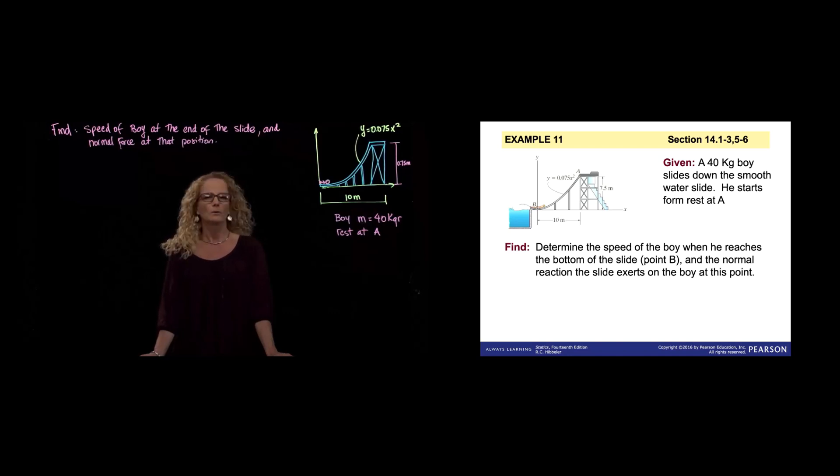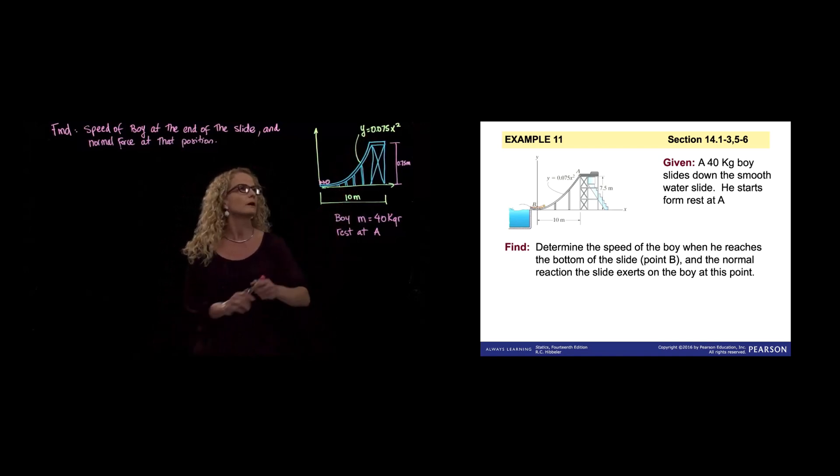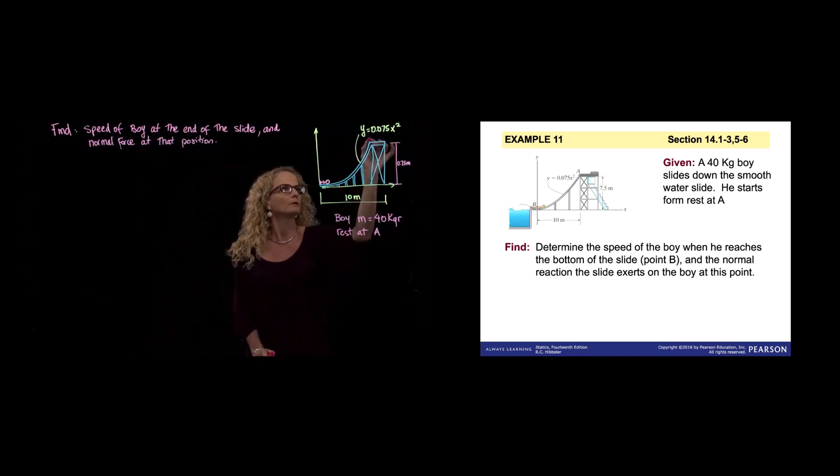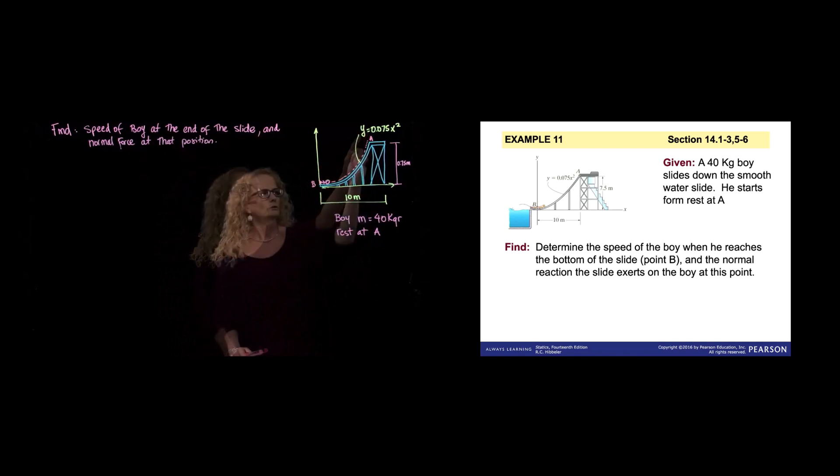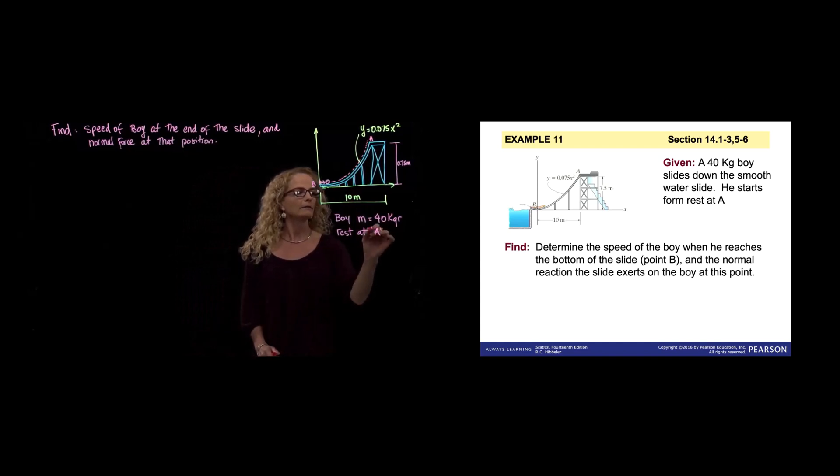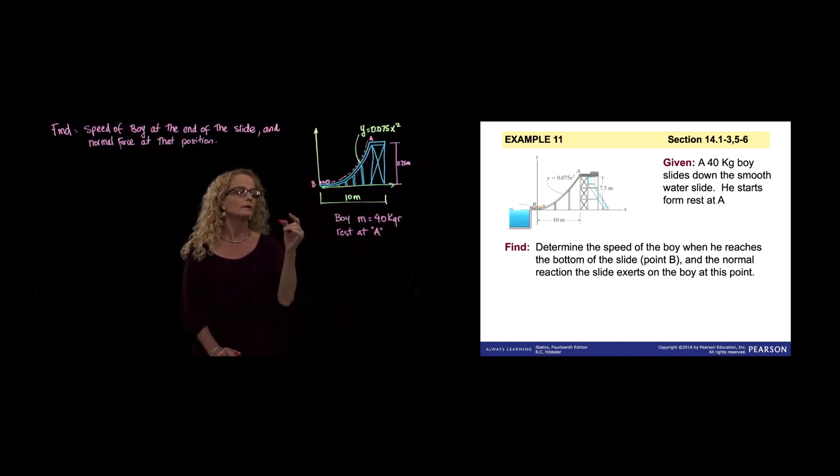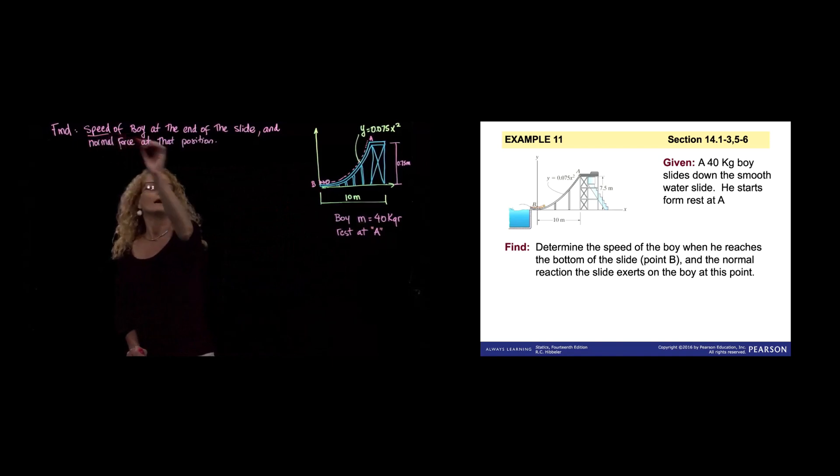Here, we have a problem where we have one boy sliding down. He starts here at point A, and this point B. He starts here at point A and slides all the way down this slope that the shape is given by that function. And it starts at A, at rest.